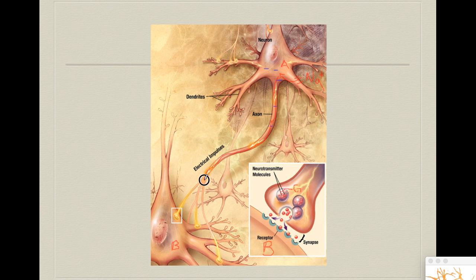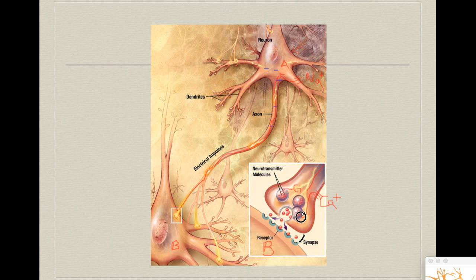Once we get to the terminal area where the vesicles are resting, we open a second ion channel — the voltage-dependent calcium channel. This calcium channel allows calcium to get in. Calcium then acts like a facilitator: it grabs the vesicle and makes it fuse with the terminal part of the neuron, releasing all of the glutamate into the space between neurons called the synaptic cleft.